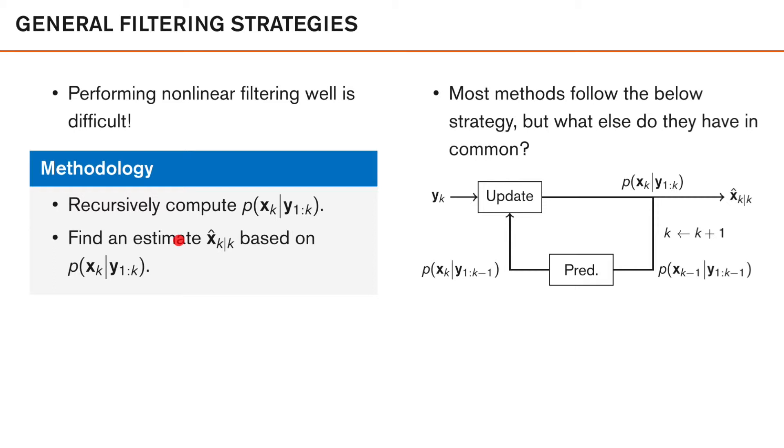The general strategy that most methods follow in order to recursively compute the posterior is to start from the posterior at the previous time instance, so p given measurements up to k minus 1. In this recursion, we call this our prior. This prior summarizes everything that we know about the state up to time k minus 1. The second thing that we usually do is that we use this old information to predict the density of the state at the same time as our new observation. We want to compute the density p given measurements up to k minus 1. We do this in the so-called prediction step in our filter.